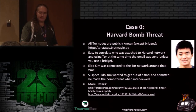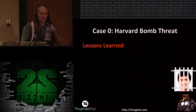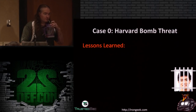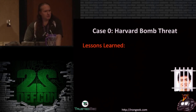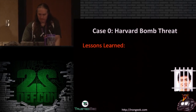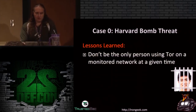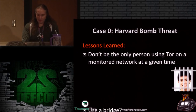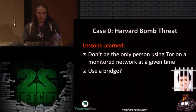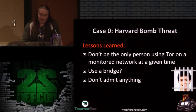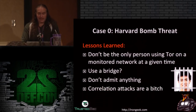OzTechnical has some great write-ups on all these cases with court documents from Scribd. These slides should be on your DEF CON CD and are also online. Lessons learned: Don't be the only person using Tor on a monitored network at any given time. Use a bridge — if he had used a bridge, he probably wouldn't have been caught. Don't do it in the first place. Don't admit anything — that would have gone a long way. And correlation attacks are a bitch.